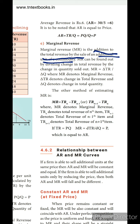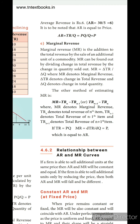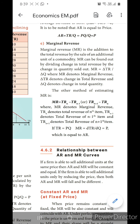The same formula we studied for marginal cost applies here. We studied MC equals TCn minus TCn-1. Similarly, MR equals TRn minus TRn-1, or alternatively TRn+1 minus TRn. Thank you, children.